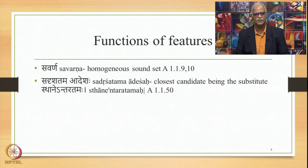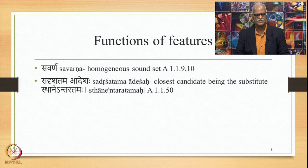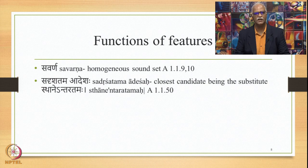We did study the classifications as well — namely vowels and consonants. Within the consonants, we studied antastha or semi-vowels, then sparsha, the five classes, then ushma or sibilants sh, sh, s and ha, and ayogavah: anuswara, visarga, jivvamulya and upadmaniya. We noted down features of each and every sound in terms of sthāna, the place of articulation, and the prayatna.